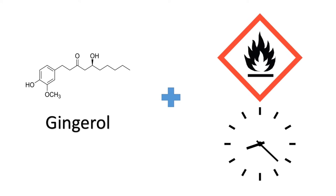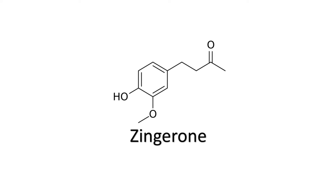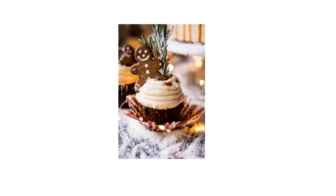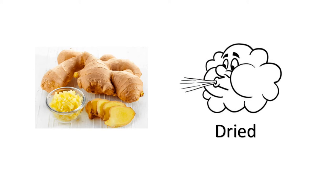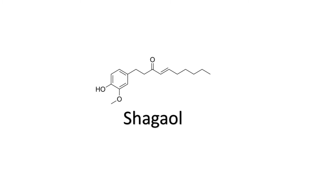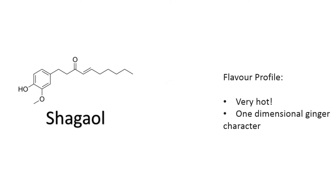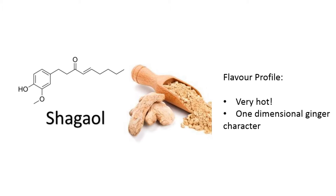When heat is applied over time to ginger, gingerol is converted to zingerone, which is the compound responsible for that sweet and spicy ginger character most easily associated with holiday cakes and Asian food, but lacks any heat. When ginger is dried, gingerol converts into both zingerone and compounds called shogaols. Shogaols are far spicier and impart almost three times more heat than gingerol.